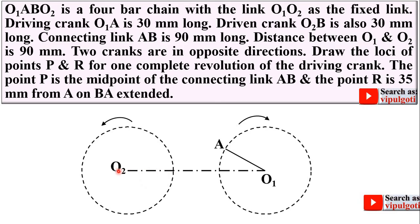Now here also you can draw the circle because the crank length is same. So here O2B is also 30 mm.